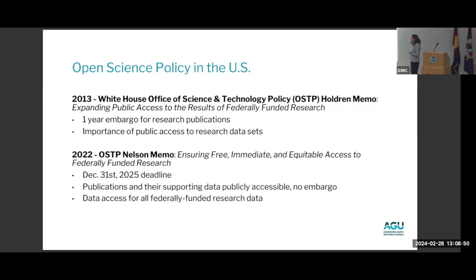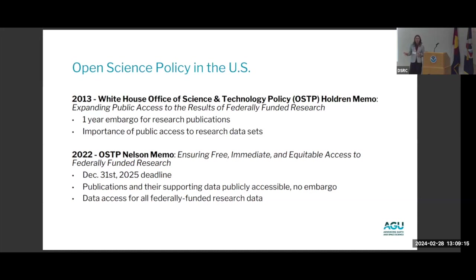In 2022, the Office of Science and Technology Policy doubled down on this. Now publications and their supporting data should be publicly accessible with no embargo — with a December 31st, 2025 deadline, which is why you may not have seen this enacted yet. Federal agencies are given time to enact these policies. The memo also emphasized the importance of public access to all data coming out of federally funded research, and a lot of agencies are now working on their data policies to practice open science.